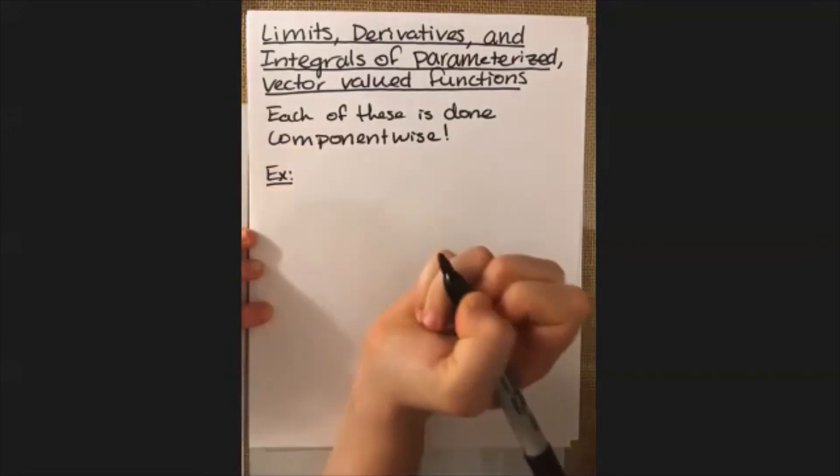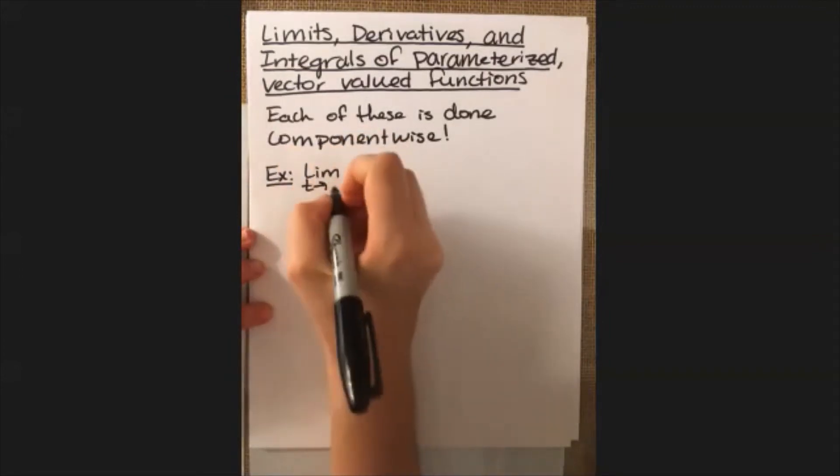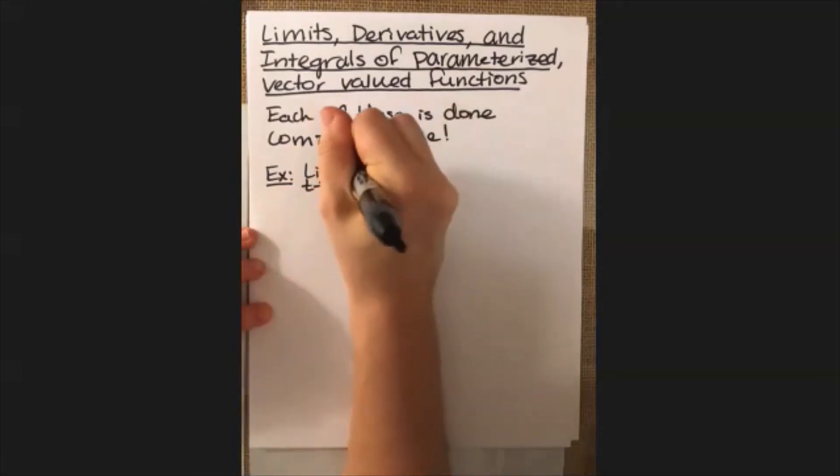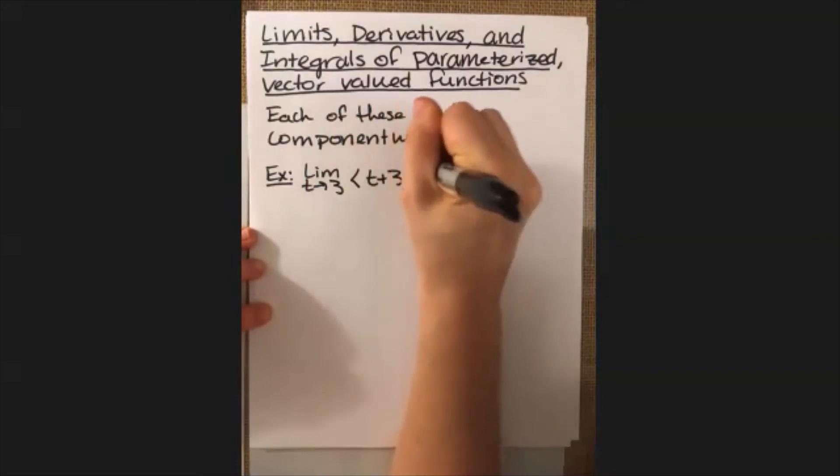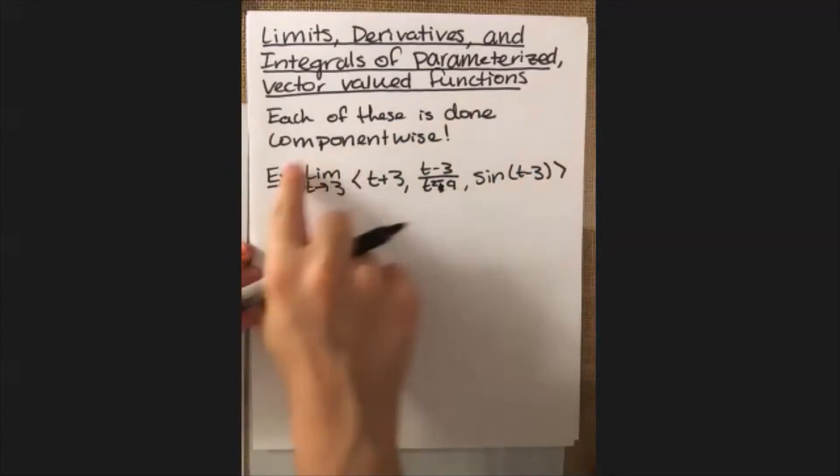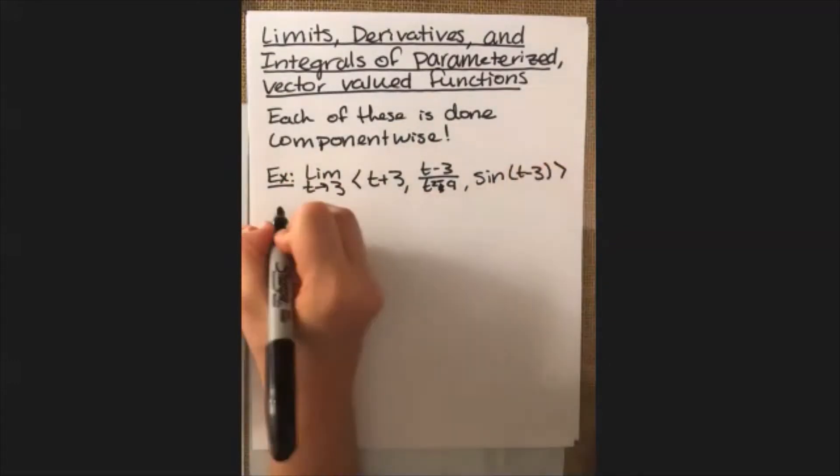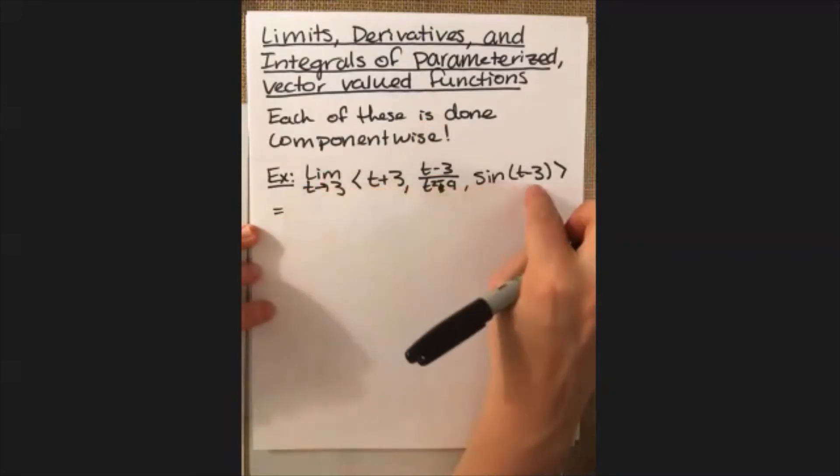So our first one here, we are going to take the limit as t approaches 3 of t plus 3, t minus 3 over t squared minus 9, and then our final component is sine of t minus 3. Since this can be done component-wise, taking this limit of the whole vector is the same idea as taking the limit and applying it to each component.